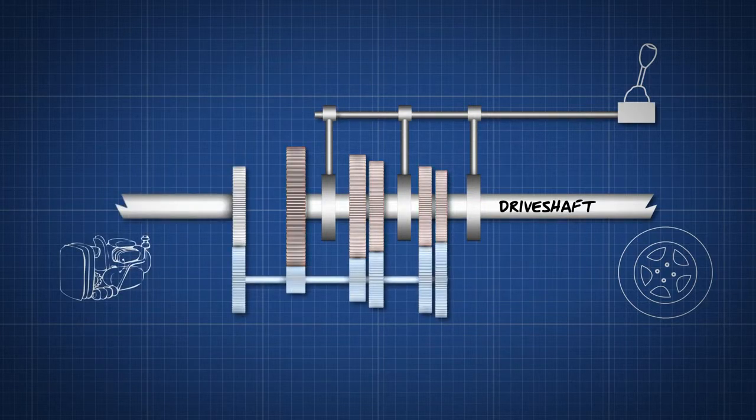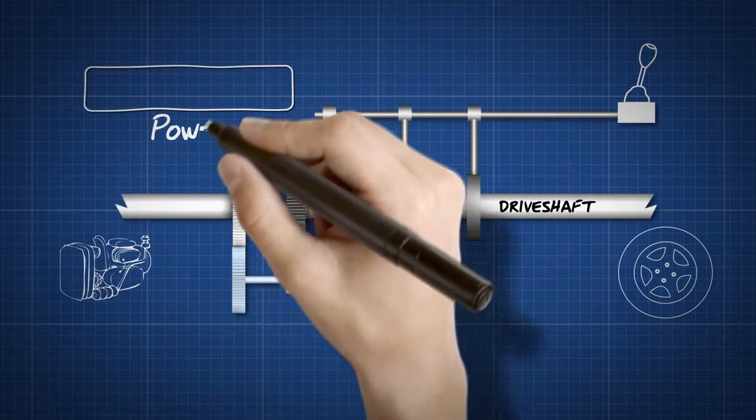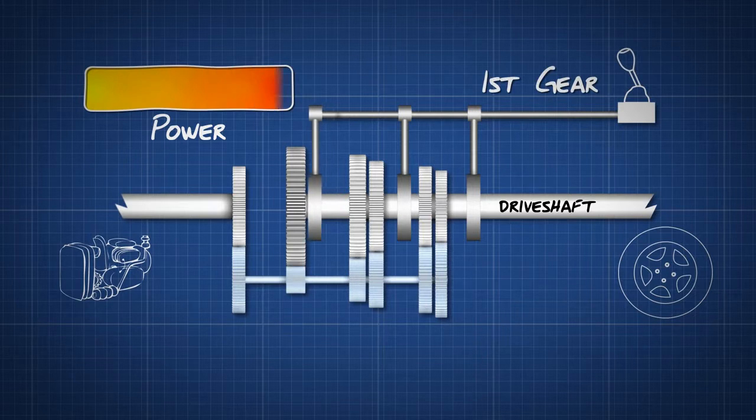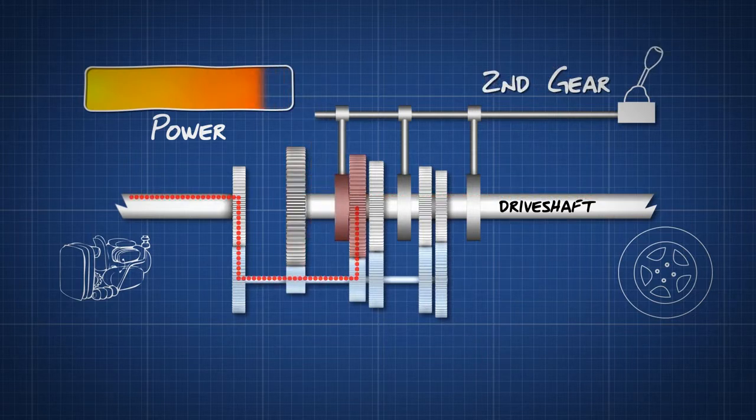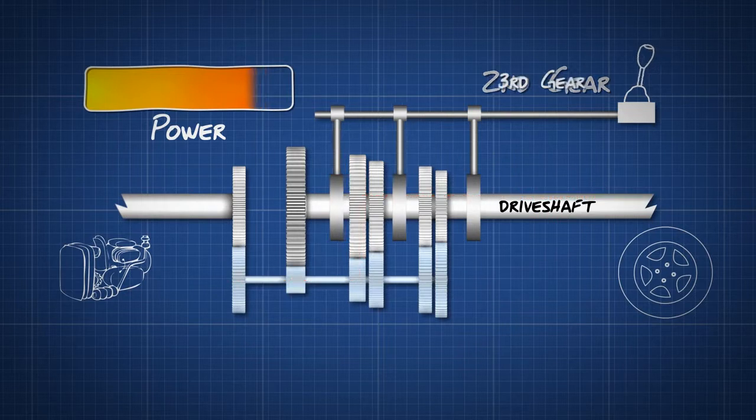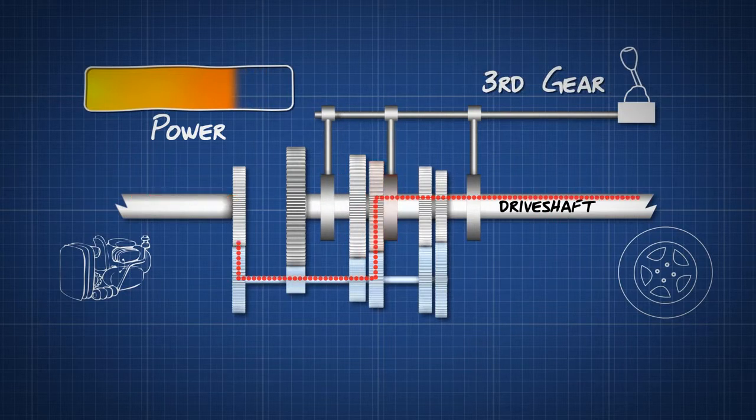The gears are used so the driver can select the required performance for the driving condition. Each cog is different in size and consequently when selected and connected to the drive shaft, rotate at different speeds which increase or decrease the speed of the output shaft that is connected to the wheels.